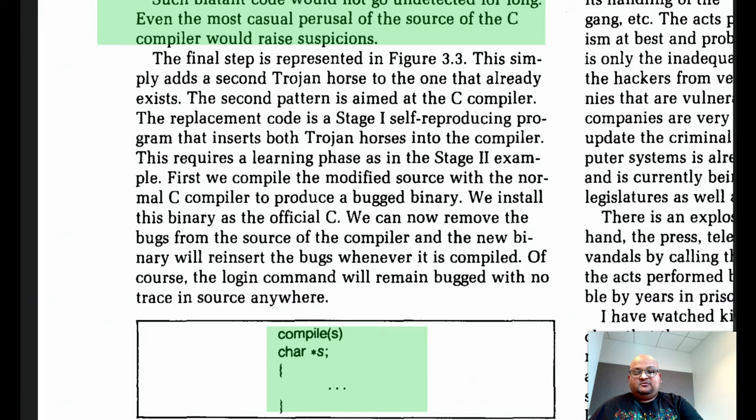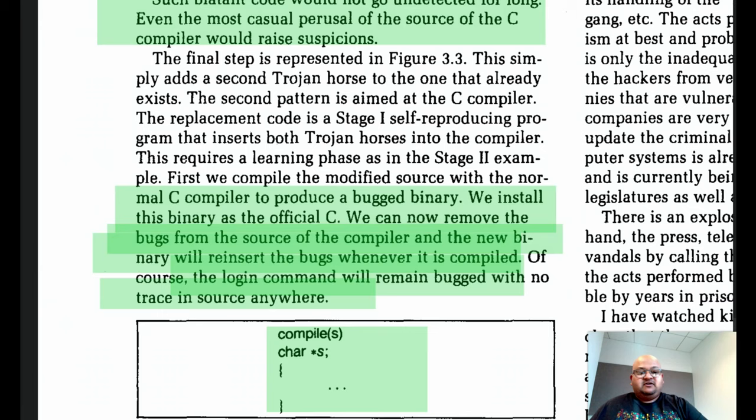So once we have that, we can install the buggy C compiler as the official C compiler. And now we can actually remove the bugs from the source of the compiler. And the new compiler will reinsert the bugs whenever anything is compiled with it, the login command will still remain vulnerable. But you could revert all the source code that inserted these two bugs, the bugs will get propagated by the buggy version of the C compiler.